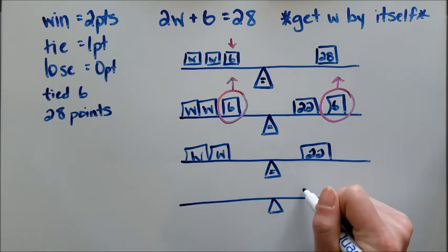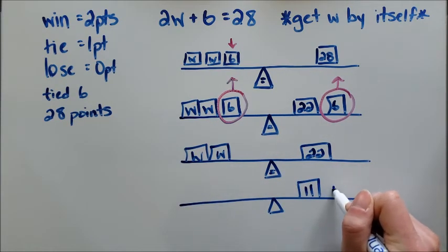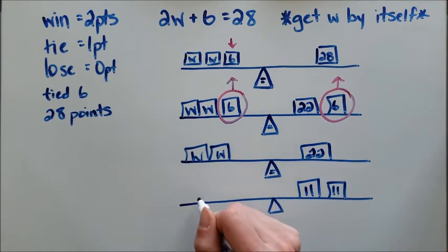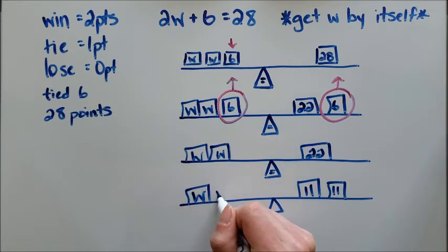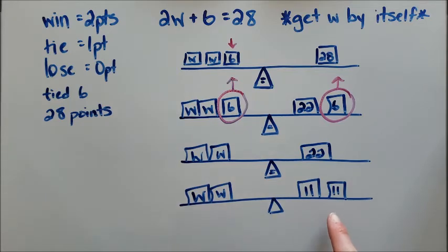So I have 22 divided by 2 is 11. So if I do something similar here and I say, you know what, I only want one W on this side, and that means I only want half of it and I only want half of it over here. I can say